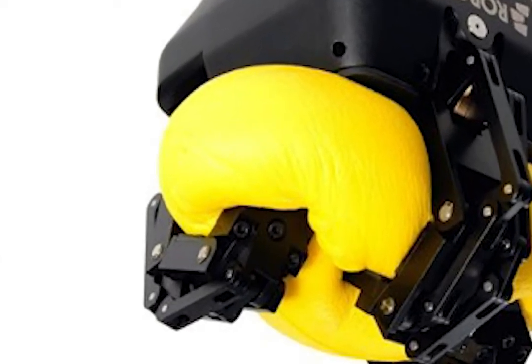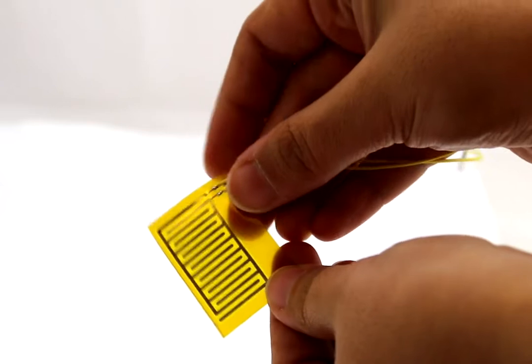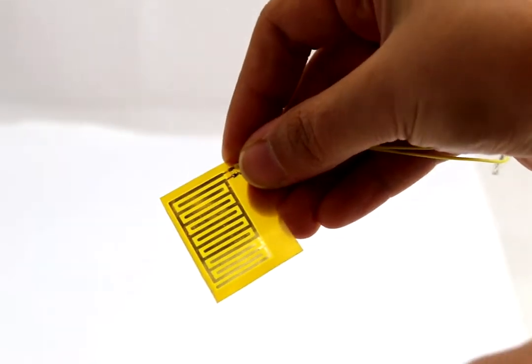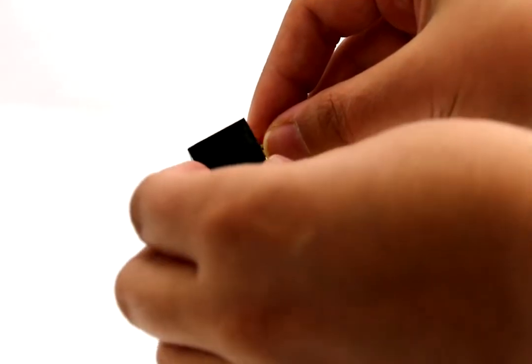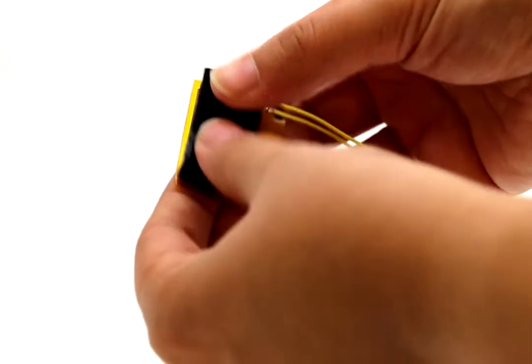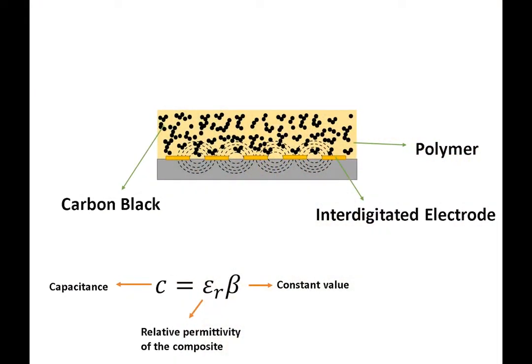Tactile sensation can solve this problem. We made an easy-to-make soft capacitive sensor based on an interdigitated electrode with a soft composite on top. The permittivity of the material changes with external loads and leads to changes in capacitance.